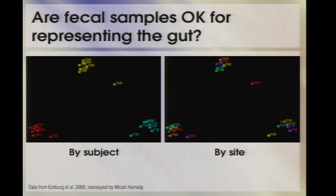This lets us start getting at the effect size of different phenomena. When we reanalyze Dave's 2005 data — six sites along the distal gut from three different subjects, plus a matched stool sample — coloring by subject shows all samples from the same subject cluster together nicely. Coloring by site shows stool is often offset, but the distance between stool and other samples from the same subject is less than the distance between subjects. Technical variability is less important than the biological variability we're hoping to uncover, and this will be a recurring theme throughout the talk.